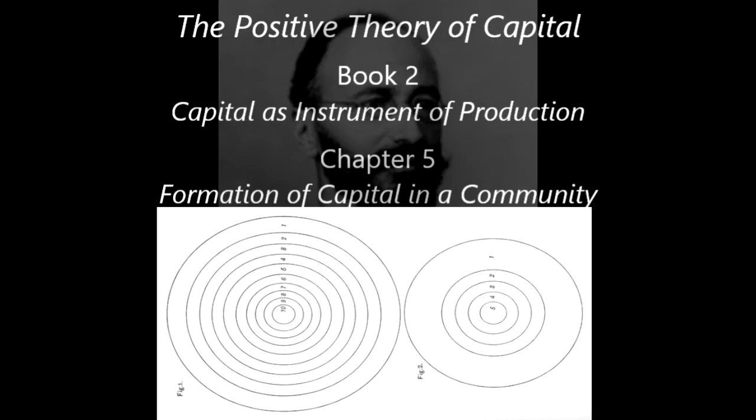This representation of the stages of maturity by concentric circles is peculiarly appropriate on this account, that it also gives a very happy expression to the quantitative relations of these stages. Exactly as the outermost of the concentric circles possesses the greatest area, while the inner circles possess a gradually decreasing one, does the first of these classes, that nearest to the completion of the process, always, by its very nature, embrace the largest quota of the total mass of capital, while a decreasingly smaller quota falls to more remote classes. There are two reasons for this.